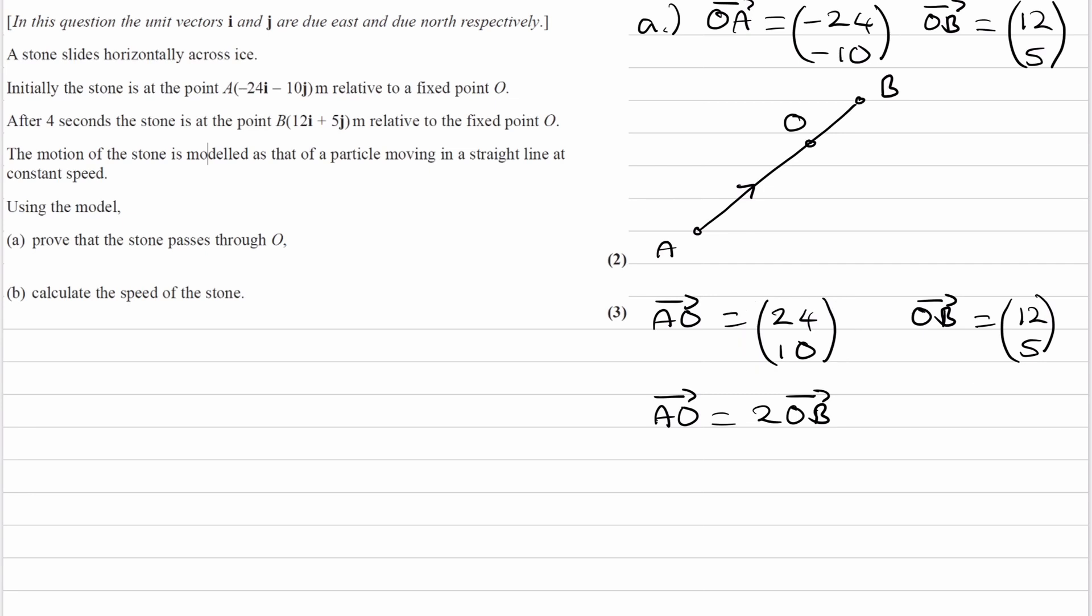So AO, this vector from A to O, is parallel to OB. The fact that AO is a positive scalar multiple of OB means that these two vectors, AO and OB, are in the same direction as one another. That's actually important to proving that the stone passes through O.